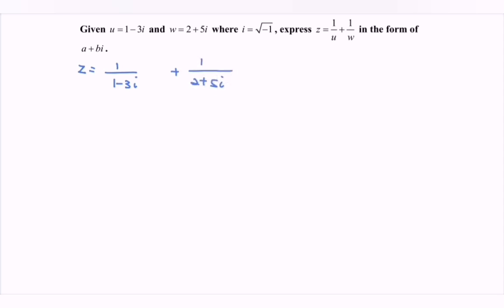What we have to do is multiply by the conjugate. The purpose is to rationalize the complex number. So what is the conjugate? We have 1 plus 3i over 1 plus 3i. For the right hand side, we have 2 minus 5i over 2 minus 5i.